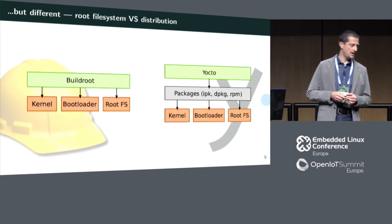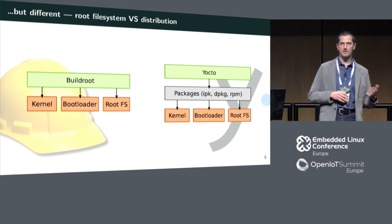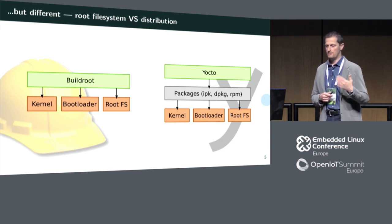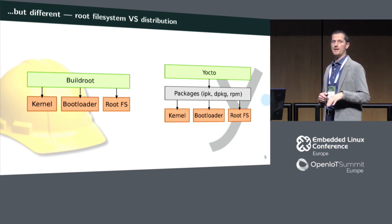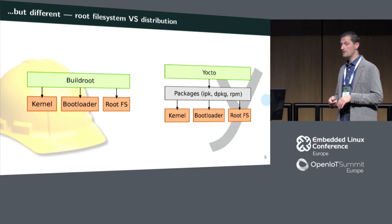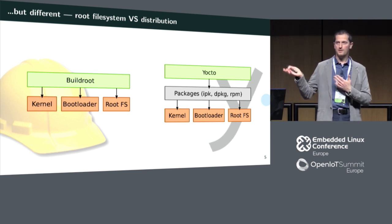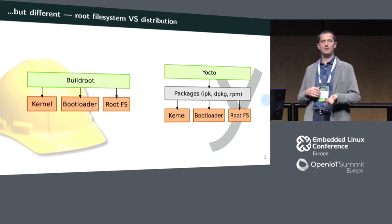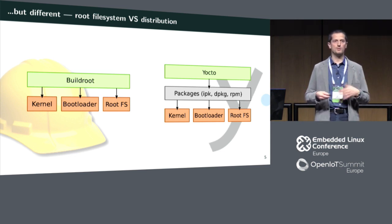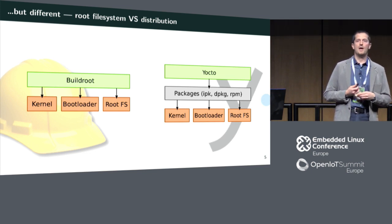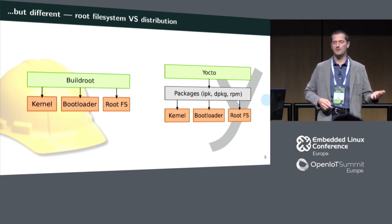Another important difference: Buildroot is focused on embedded Linux devices. Most typically they use a root file system and upgrade the entire root file system. So it directly builds a kernel, a bootloader, a rootfs, and a toolchain. Yocto instead is meant to build an entire distribution — it builds packages: IPKG, RPM, DPKG, whatever — and you can use those on a package feed on a server so devices can do things like apt install. It can also produce the same thing as Buildroot — kernel, bootloader, toolchain — and the root file system as a sort of byproduct of packages, by creating an empty directory and installing a list of packages into it.